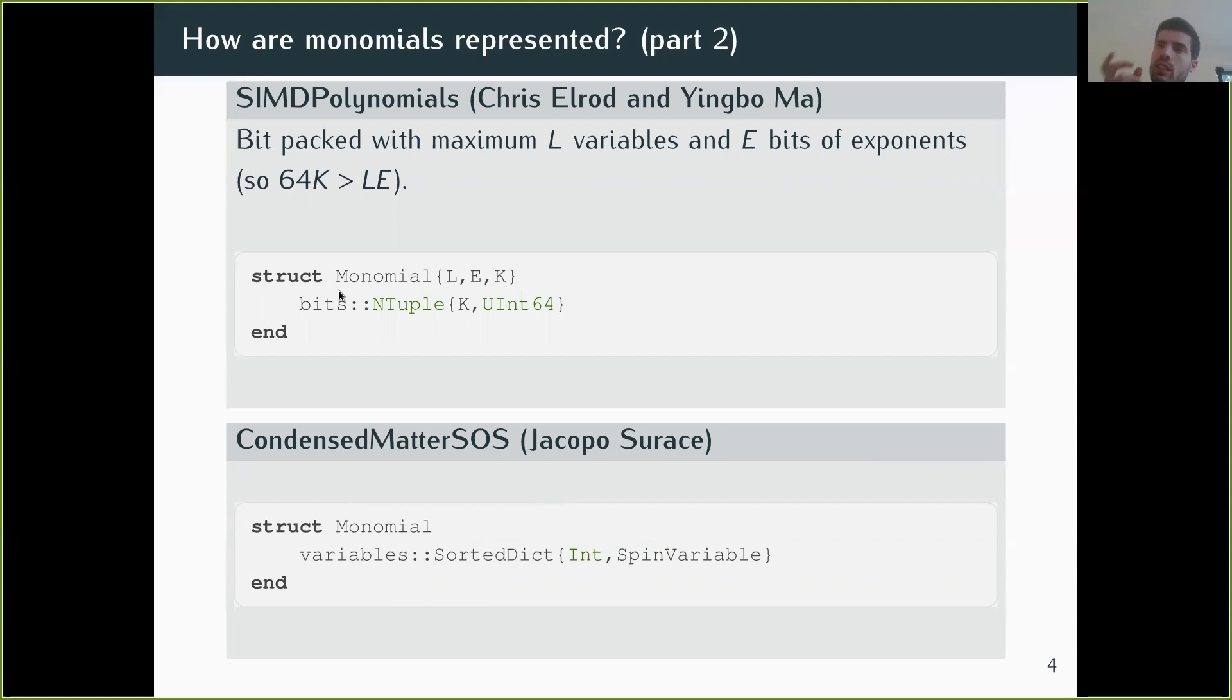And they took care that the implementation would be friendly with the SIMD operations on the compiler, so that multiplication and comparison of monomials is much faster. And then the last example in the case of condensed matter, we have an application when you have different sites.